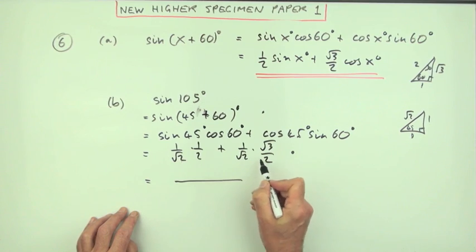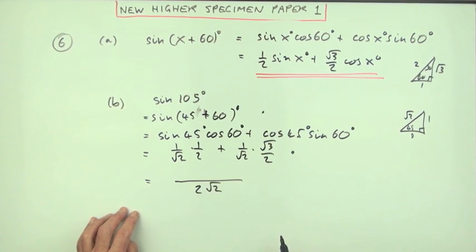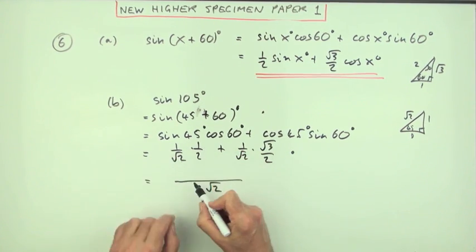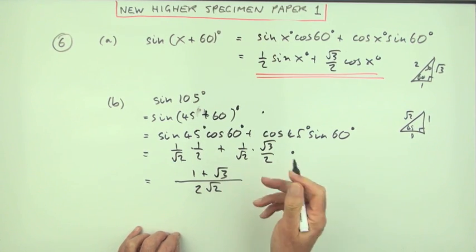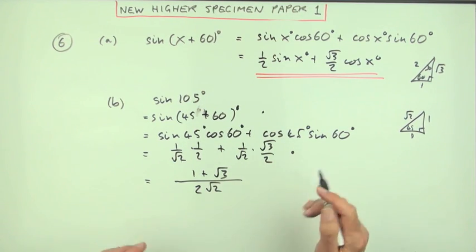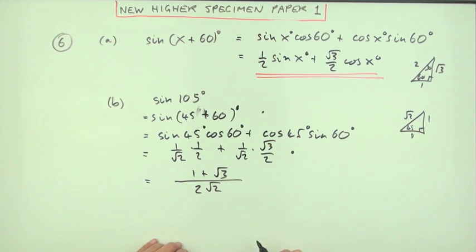Because I've got a common denominator of 2√2, and then that's one times one is one, and that's one times root three is root three. I can't make that any neater apart from maybe rationalizing the denominator, so I'll just leave that as my answer.